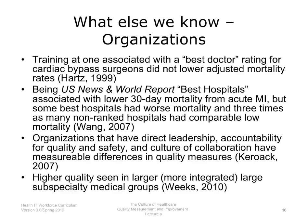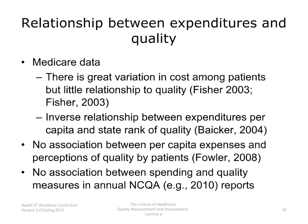Is there a relationship between health care expenditures and quality? Medicare data shows great variation in cost among patients but little relationship to quality. One study actually shows an inverse relationship between expenditures per capita and quality rank in a given state. There is also no association between per capita expenses and patients' perceptions of quality, or between spending and quality measures in annual NCQA reports.